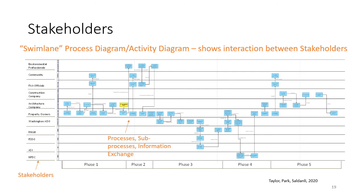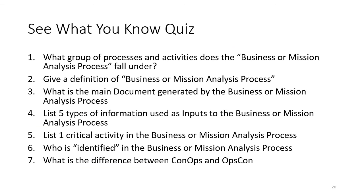In all of this business process analysis, we want to document the process, and part of that is understanding who the stakeholders are. The stakeholder analysis is in a separate process activity that comes next and will be the subject of the next video. But the business or mission analysis process is going to identify who the stakeholders are. One way that works very effectively to document this process is through a swim lane process diagram — called a swim lane because all stakeholders have their own horizontal lanes in which they swim, and information is passed back and forth between all of the lanes.